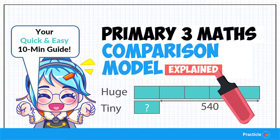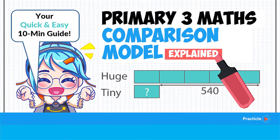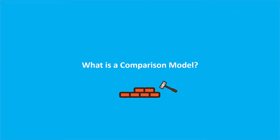So what is the comparison model? A comparison model is a kind of bar model where we draw the bars side by side so that we can see the difference between the objects better.